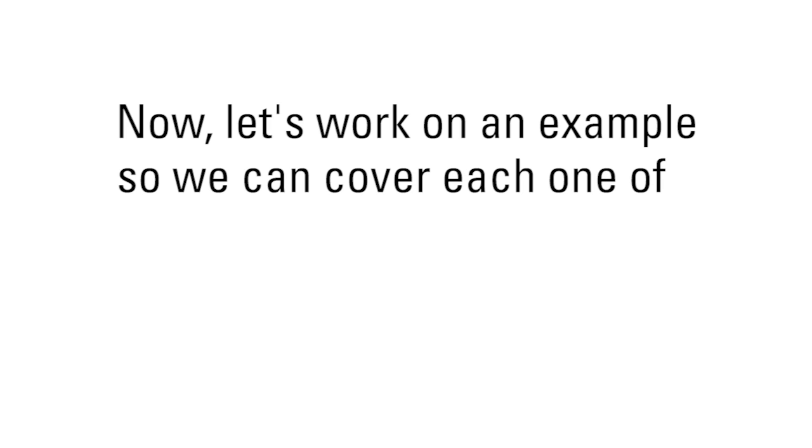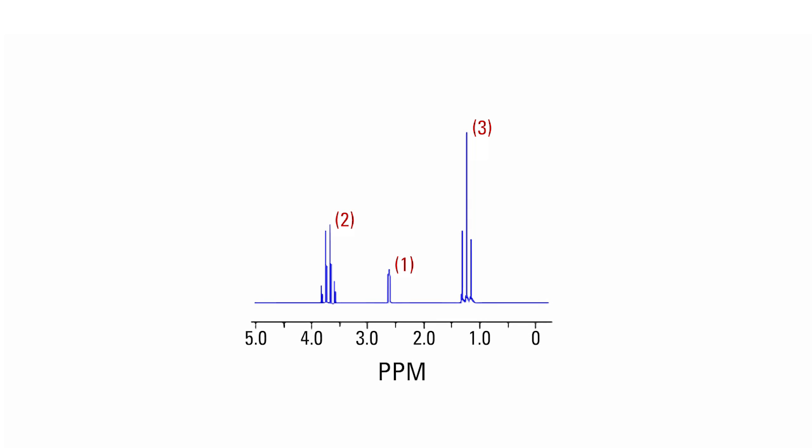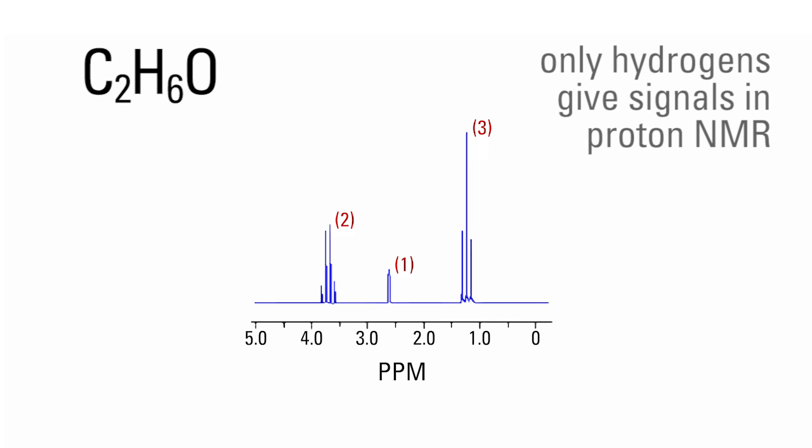Now, let's work on an example so we can cover each one of the features of NMR spectra. Our example will be this spectrum for a compound with the molecular formula C2H6O. According to the molecular formula, this compound has two carbons, six hydrogens, and one oxygen. Only hydrogens give signals in proton NMR, so the fact that we see three groups of signals indicates that we have three different kinds of hydrogens.